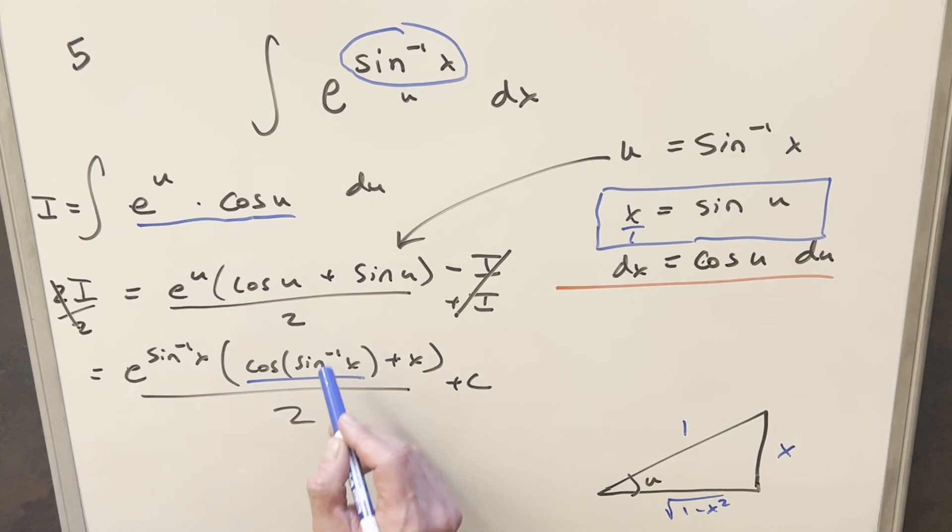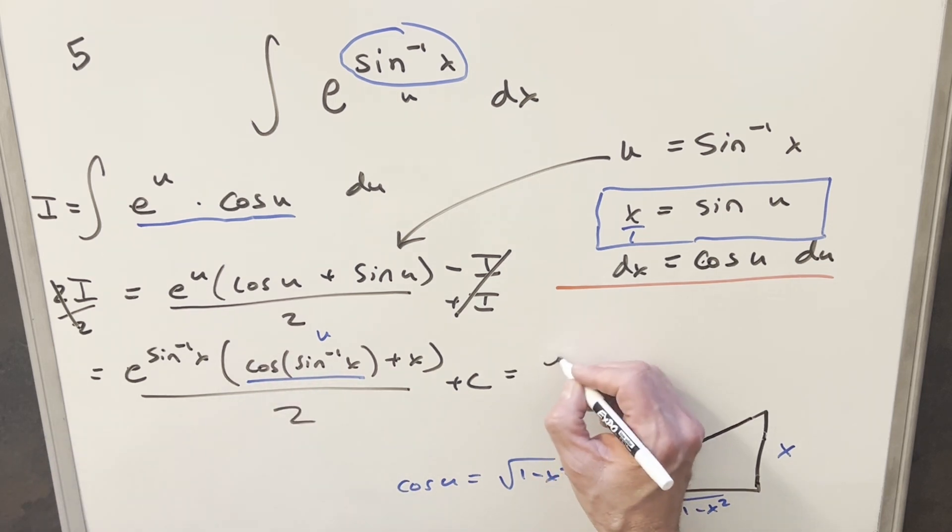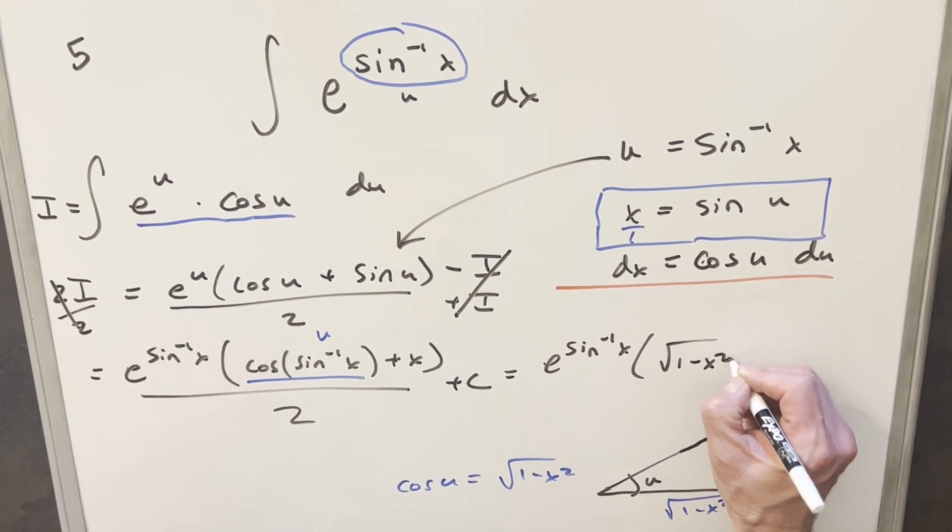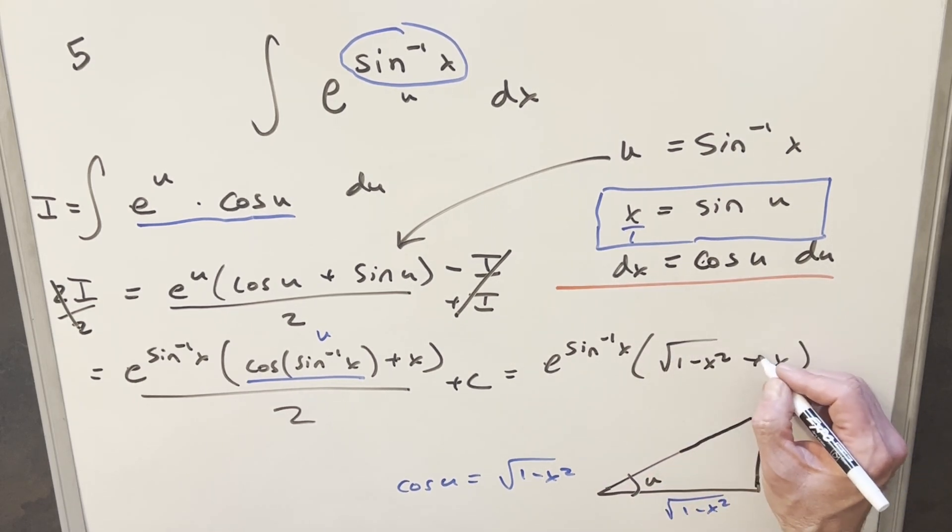So coming back to our solution, we have arcsin of x. That's just u. So this thing here, we can go back and have this. This is cosine of u. So coming to our triangle, if we want a value for cosine of u, that's just going to be adjacent over hypotenuse. Or that's just going to be, we can just write that as square root of 1 minus x squared. And so that's going to be my value for cosine of arcsin of x. So for my alternative form of this solution, I'll just write it as e to the arcsin of x. Then we'll use this, square root of 1 minus x squared, plus x, all over 2, plus C. And that's it.